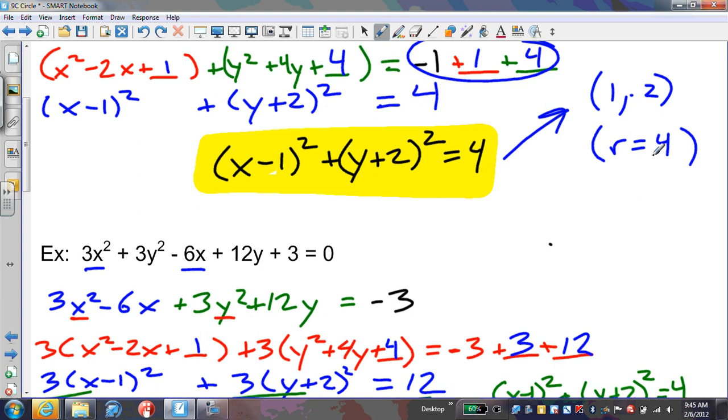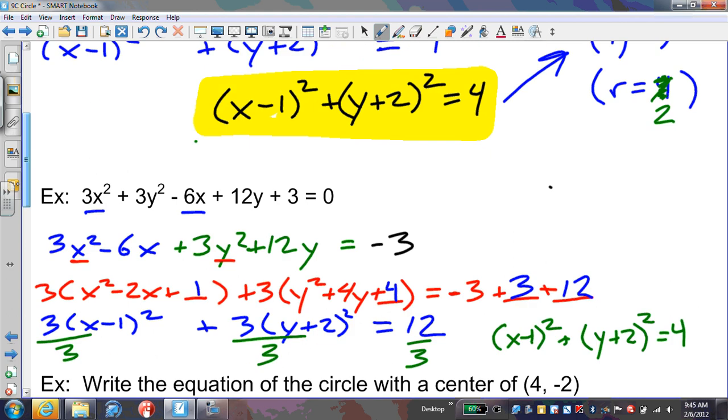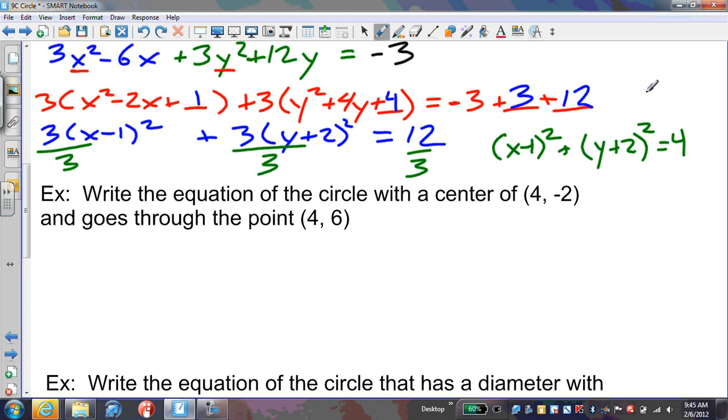Actually, I made a mistake on the first example. The radius should be 2, not 4, because we take the square root of 4. Let me make that correction. Notice both examples have center (1, -2) and radius 2.